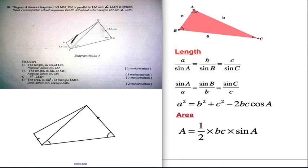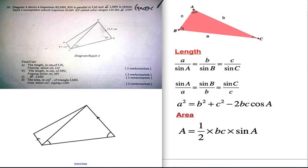You have to understand what is the meaning of obtuse. Obtuse means this angle will be bigger than 90 and less than 180. So we call it an obtuse angle — obtuse angle is between 90 and 180.